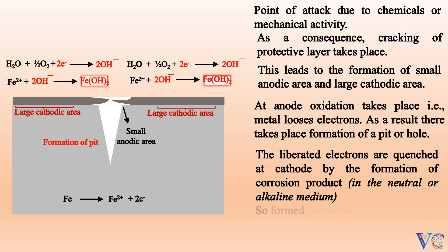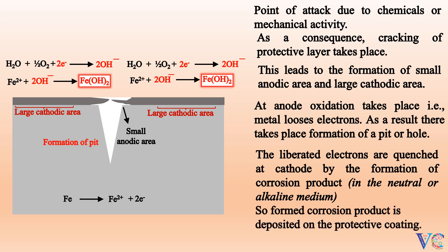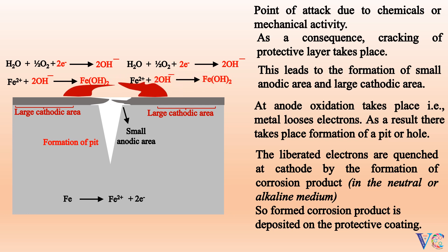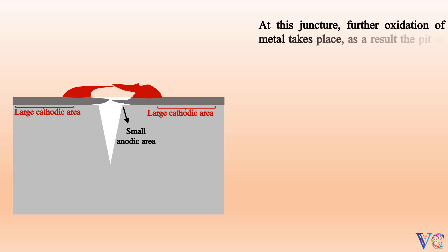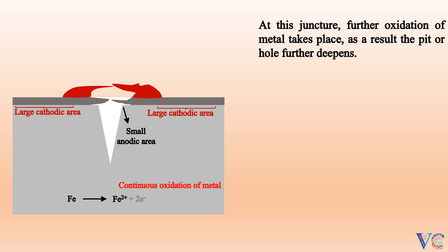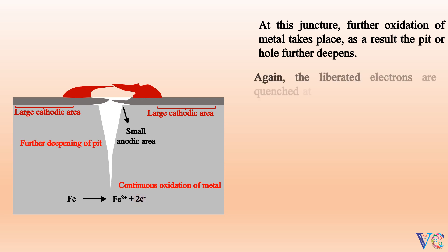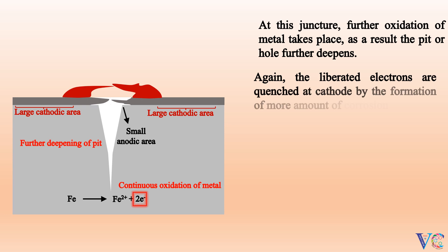The corrosion product is deposited on the protective coating. At this juncture, further oxidation of metal takes place. As a result, the pit further deepens. Continuous oxidation of metal causes further deepening of the pit. Again, the liberated electrons are quenched at the cathode by the formation of corrosion product.